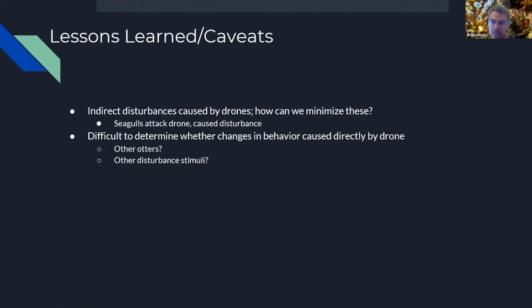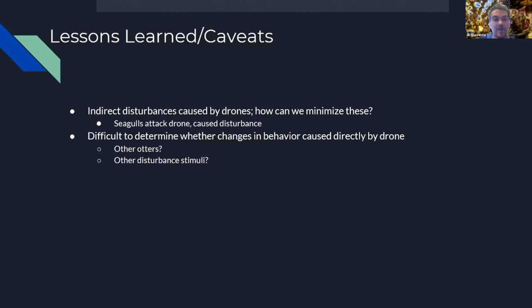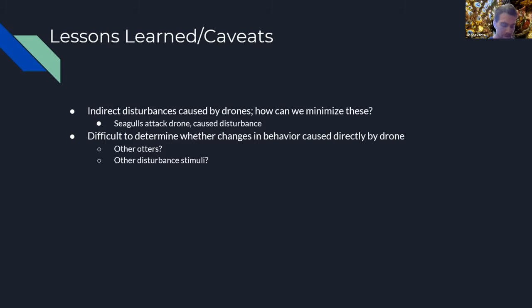A couple of things we've learned from fieldwork so far: besides direct disturbance of drones on sea otters, it's really important to think about indirect disturbances. We encountered situations where seagulls attacked the drone while we were flying over, exhibiting behaviors similar to how they respond to birds of prey. You could have a flock of 20 or so seagulls coming at the drone to scare it away. Our hypothesis was that sea otters weren't necessarily responding to the drone, but to the commotion from the large flock of gulls — but this is still important to incorporate into our guidelines for safe drone behavior.